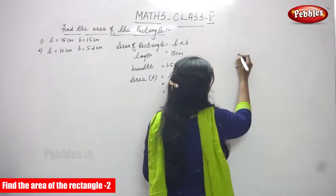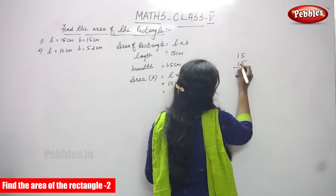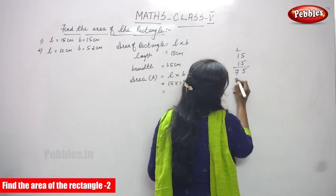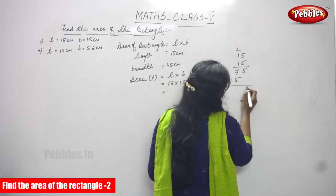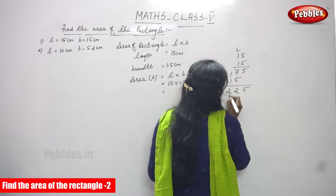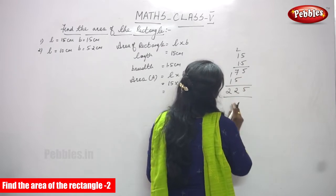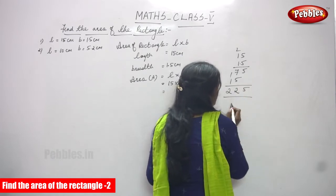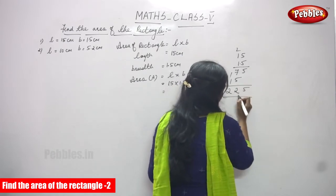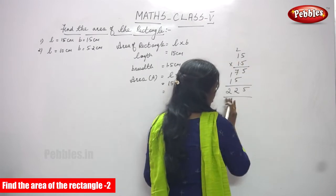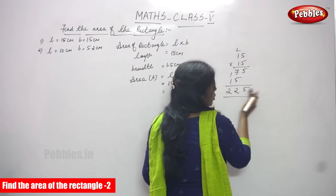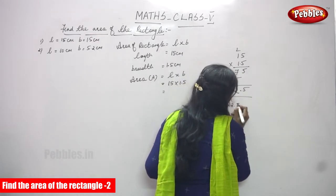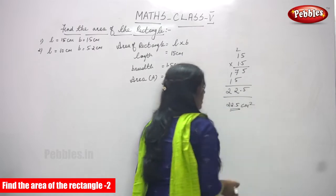Multiplying 15 by 1.5: 5 into 5 is 25, carry over 2; 1 into 5 is 5, plus 2 is 7 — giving 75. Then 1 into 15 is 15, shifted one place. Adding gives 225. Now we put the decimal point from the right, giving 22.5 centimeters square.